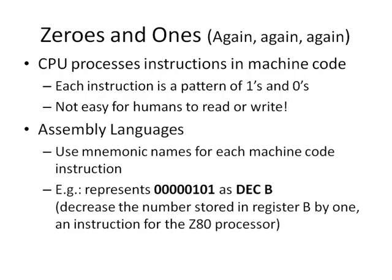The earliest programming languages that were developed were assembly languages. These use simple mnemonic names for each machine code instruction. For example, if the pattern 00000101 represented the machine code instruction 'decrement B' — an instruction to decrease the number stored in a particular register by one — then instead we can use the mnemonic DEC B as the instruction instead of using the pattern of zeros and ones. The assembler can then take this more readable version and turn it into zeros and ones when it's time for the computer to operate on it.